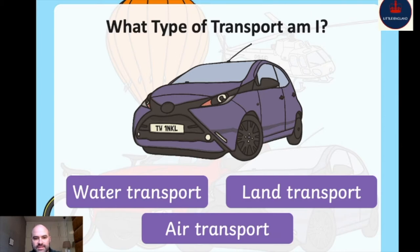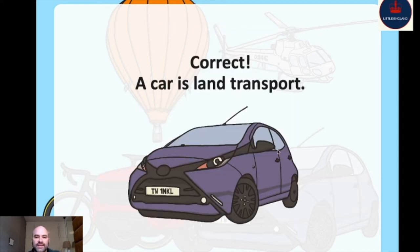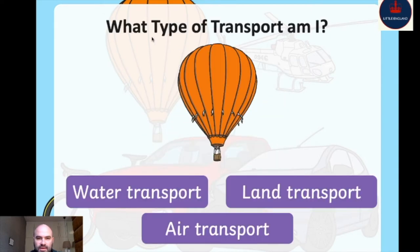What type of transport is this? You guys know that this is a car, and a car drives on land. Is it land, air, or water? A car drives on land, so this is land transport. Now this is a bicycle. Does a bike travel on land, air, or water? You can't ride a bicycle in the water, but you can ride one on land, so it is land transport.